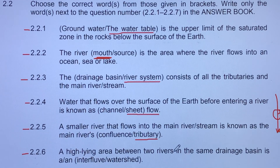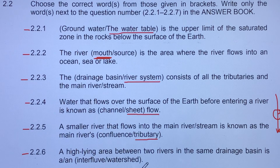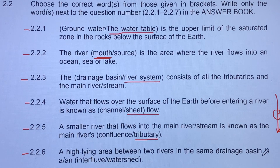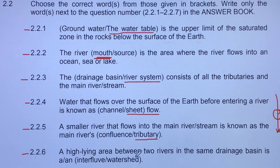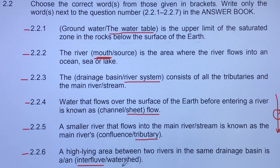2.2.6: a high-lying area between two rivers in the same drainage basin is an interfluve or a watershed. We are talking about a high-lying area within the same drainage basin. This is one of the terms students most likely confuse. The high-lying area dividing two rivers within the very same drainage basin is known as an interfluve.